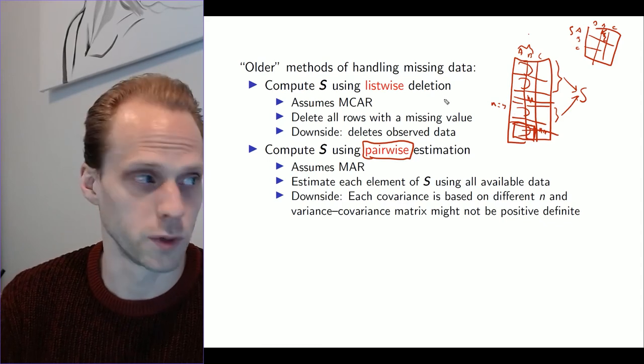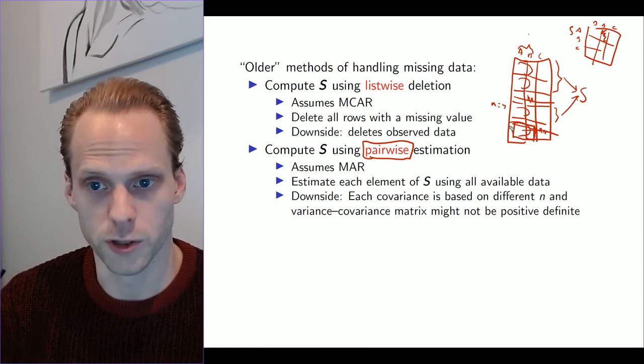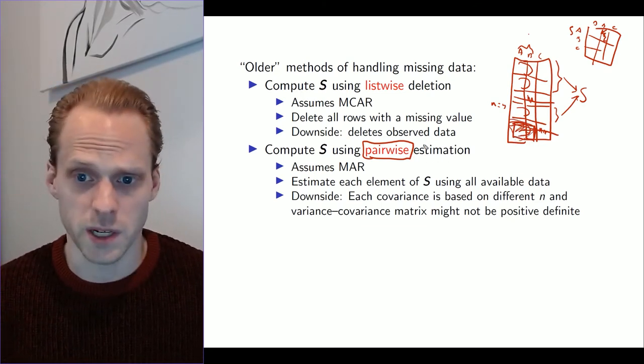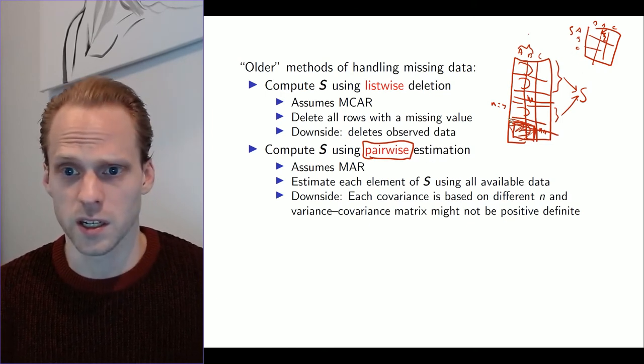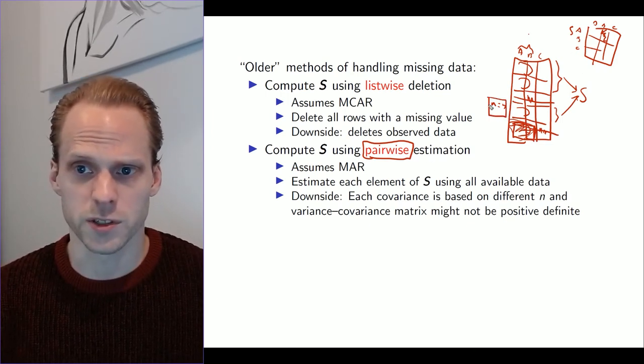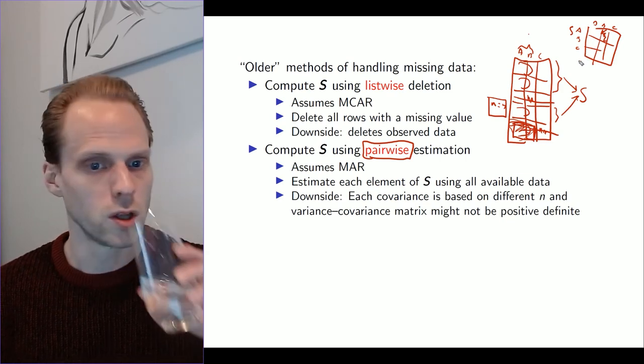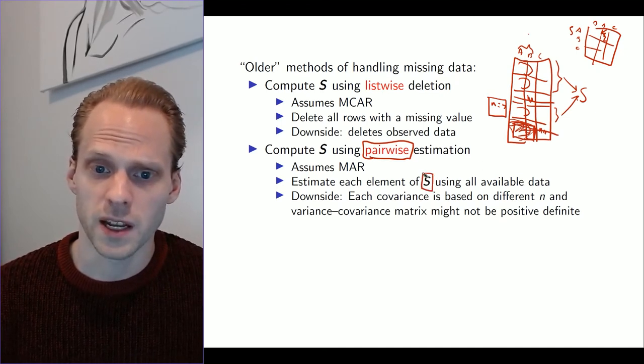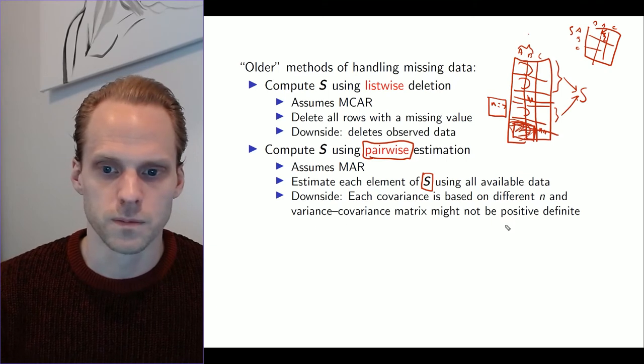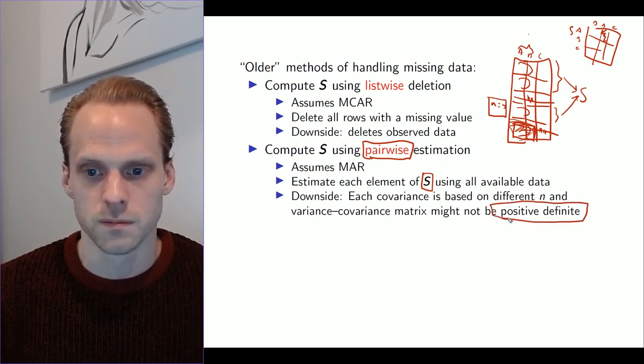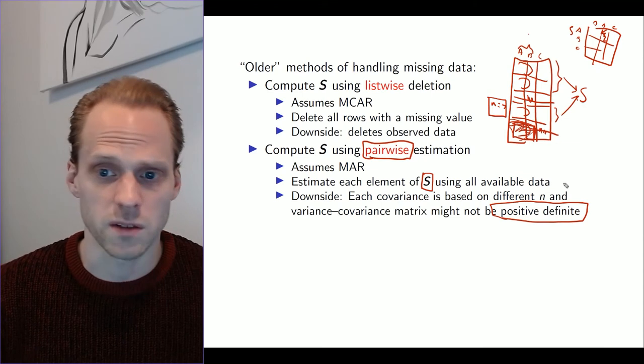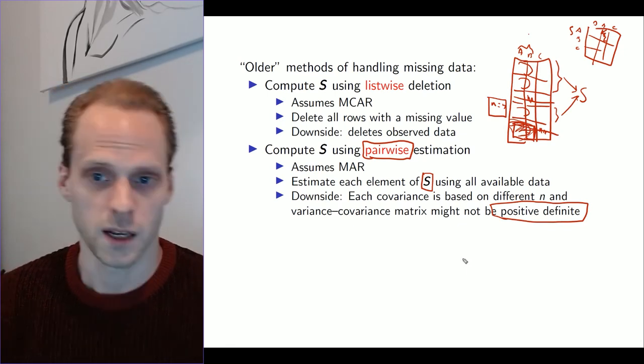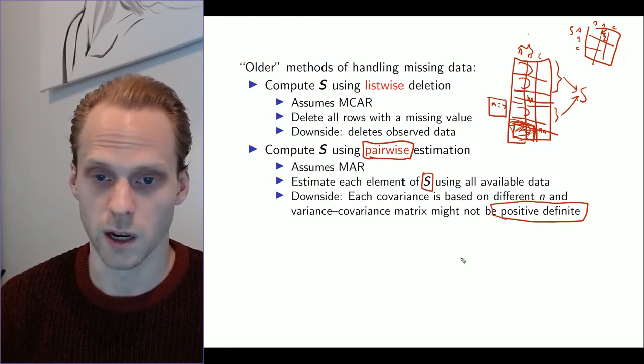Listwise estimation works really well. The only problem is that we're not using data that we have, so we also delete data that is perfectly fine. Pairwise estimation also works well, but the problem is that it's much less clear what your sample size is, because the sample size is different per cell. Another problem is that S might not be a valid variance covariance matrix because it has to be positive definite. That might no longer be the case, so your software might complain a lot when you do this.